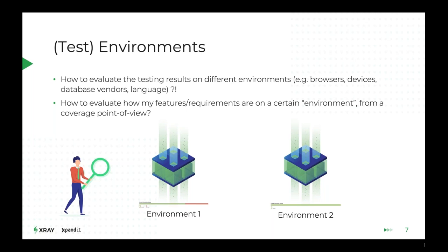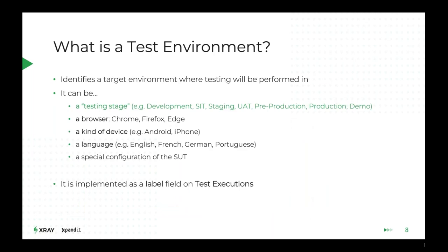X-ray also provides the ability to analyze your project or test campaign by different environments. Environments can be something like a testing stage — development, staging, pre-production, or even production — where the same test case is tested across all of them. A browser is another concrete example: if you're doing web apps, you might test in Chrome, Firefox, and so on using the same test cases.